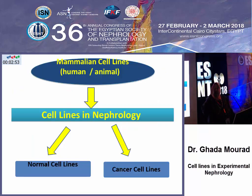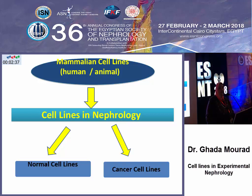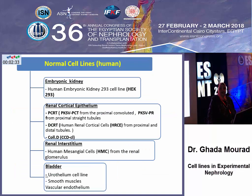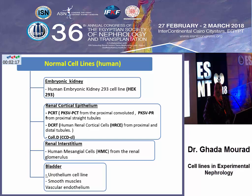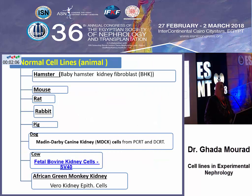Referring to cell line applications in nephrology, we can speak about normal cell lines as well as cancer cell lines, which are today very important tools for nephrology research. Regarding normal cell lines, these are either derived from human beings or from animals. There are well-established cell lines for the different epithelial types of the kidney, starting from the renal tubules and renal collecting system as well as from the urinary bladder. All animal species have also been used for establishment of animal kidney cell lines, used as very good models in nephrology research.